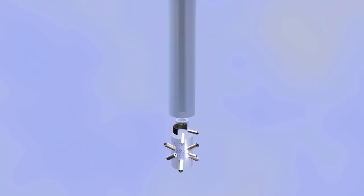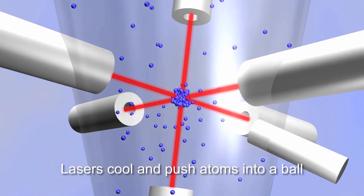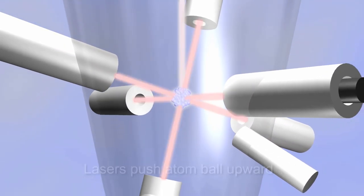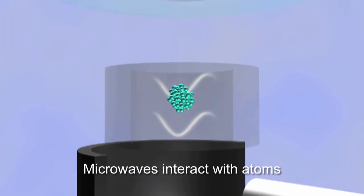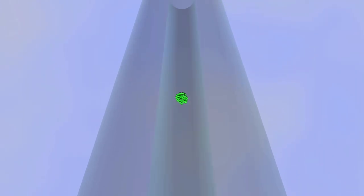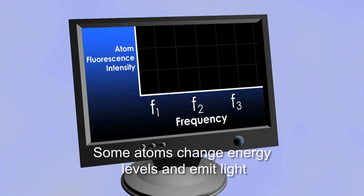First, lasers slow and cool the atoms to just a fraction of a millionth of a degree above absolute zero. A laser then lofts the ultra-cold atoms into a tube inside a liquid nitrogen-cooled chamber. The cold chamber reduces errors caused by thermal radiation, which slightly alters the ticking rate of the atoms.